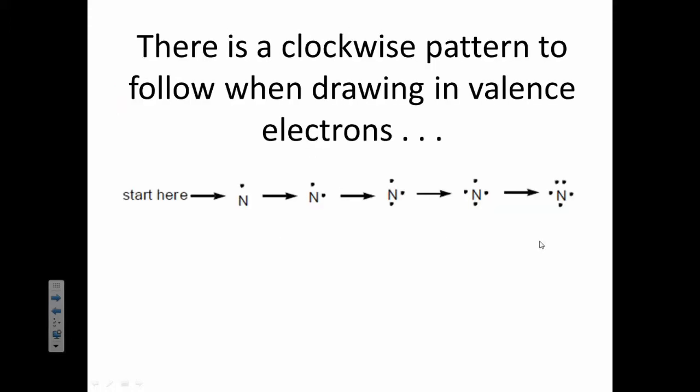There's a clockwise pattern that you should use when you're drawing these. For example, if you were drawing the five valence electrons for nitrogen, let's go one, two, three, four, and five. Notice at the top, there's a happy pair. All of these electrons are lonely, and they want to form a bond.